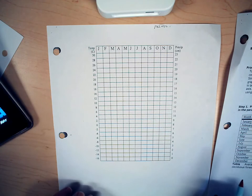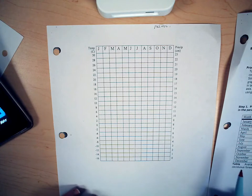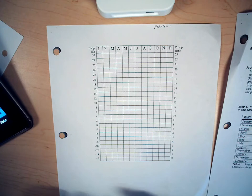In this video I'm going to show you how to draw a climatogram. A climatogram is a graph that shows two pieces of data: average monthly precipitation and average monthly temperature.